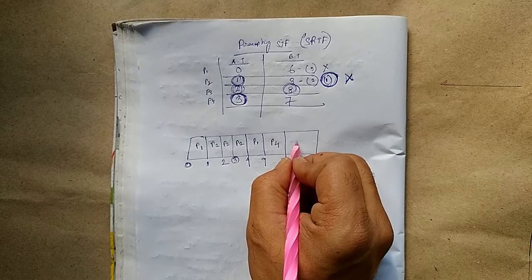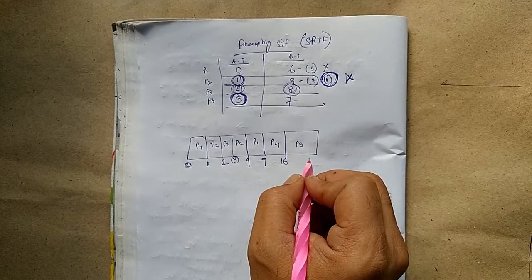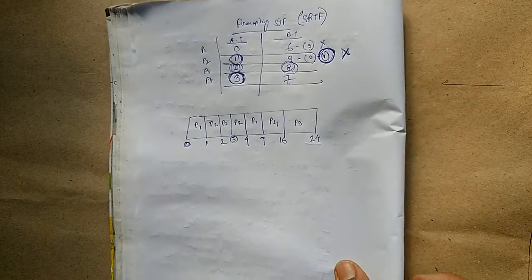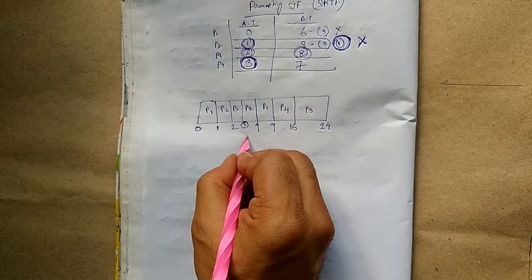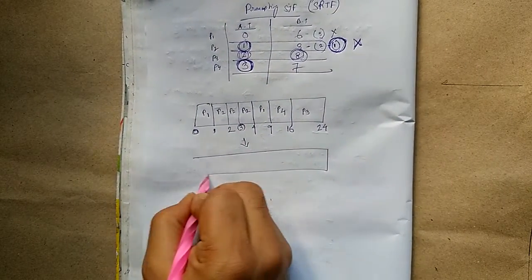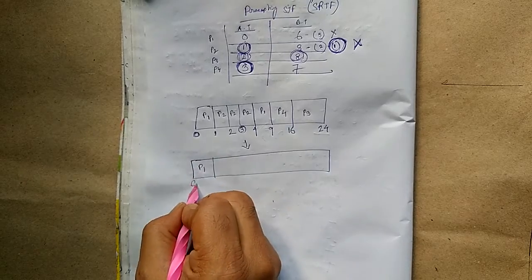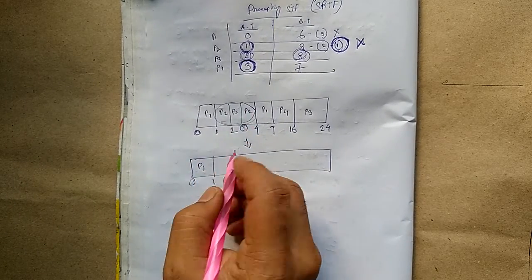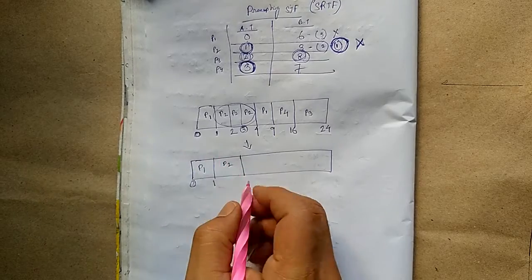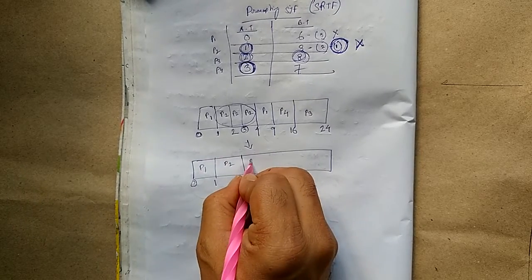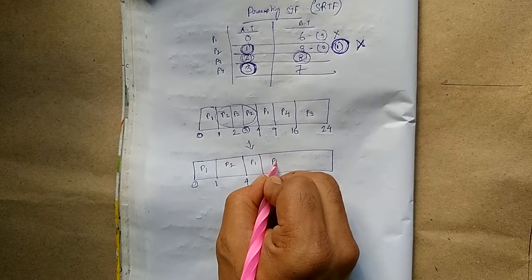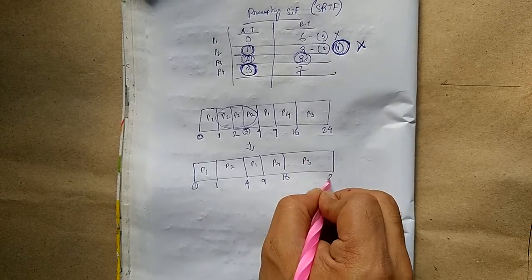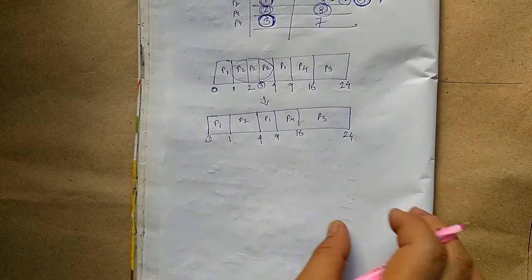Next, we will execute process P3, finishing at time 24. Now we can draw the modified Gantt chart. Process P1: start time 0 to 1, then merged. Process P2: 1 to 4. Process P1: 4 to 9. Process P4: 9 to 16. Process P3: 16 to 24. This is the modified Gantt chart.